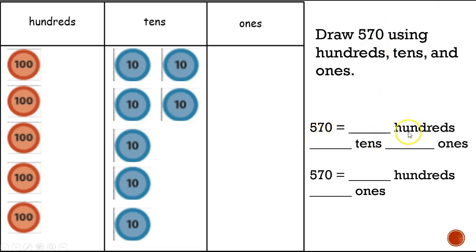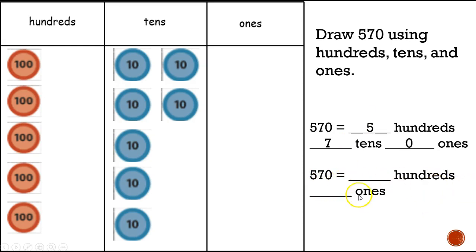Now I fill out my charts. Five hundred and seventy equals five hundreds, seven tens, and zero ones. This is tricky again because they took out the tens — we're adding the tens with the ones. How many hundreds? Five. And how many ones? Seventy. There are seventy ones.